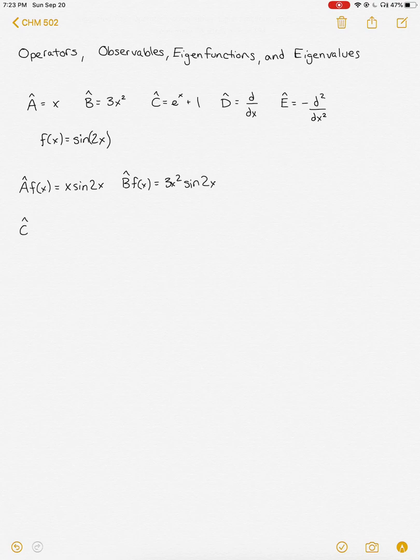In some cases, our operators might have additions or multiple terms in them. In this case, we simply apply each term to our function. So if our operator C is e to the x plus 1, and we operate on our function sine of 2x, we end up with e to the x sine of 2x plus sine of 2x. We just operate on both terms, just carry through like you would in algebra.